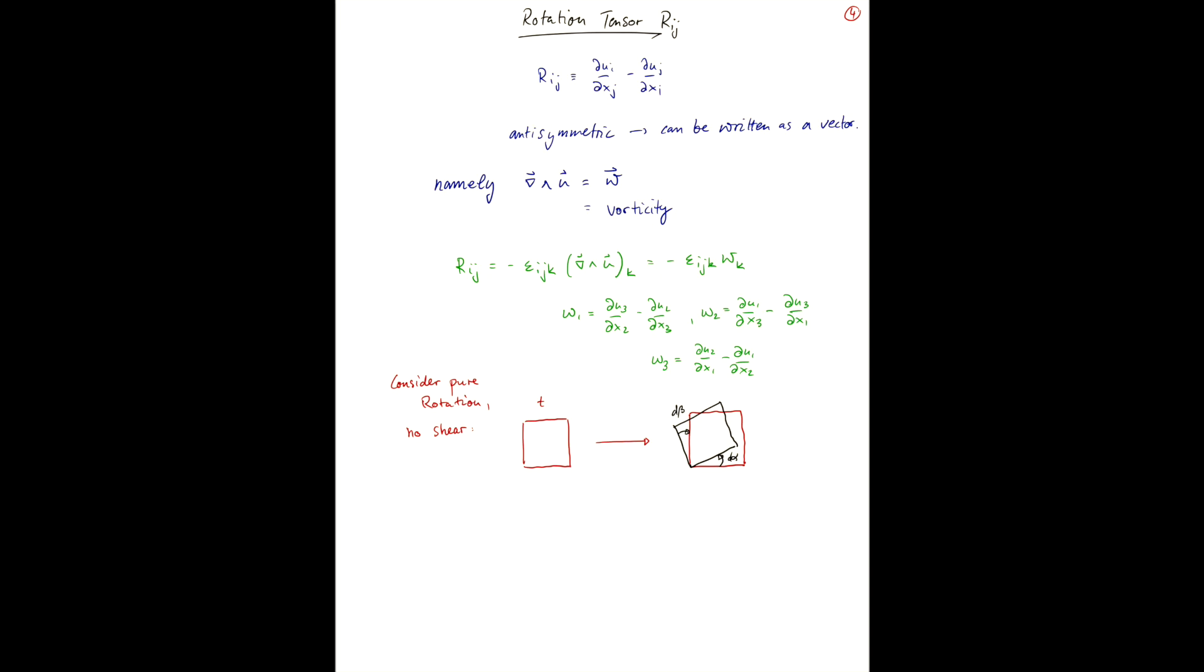d-alpha and d-beta for the other element. So analogously to what we showed earlier, d-alpha is just du1/dx2 dt and d-beta is just du2/dx1 dt. And since this is rigid body rotation, d-beta really is the same as d-alpha, just with a negative sign, since we've defined them in opposing directions.